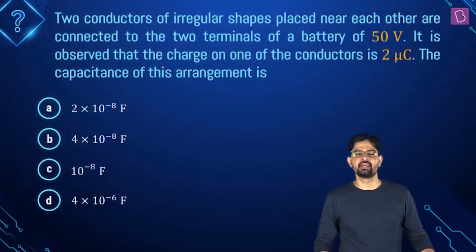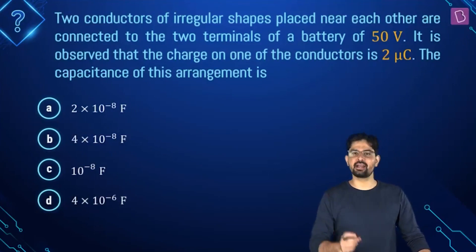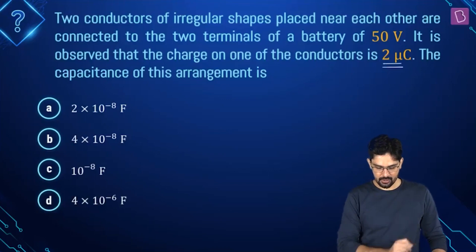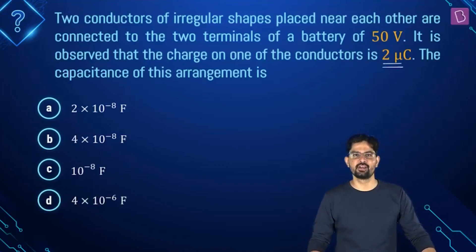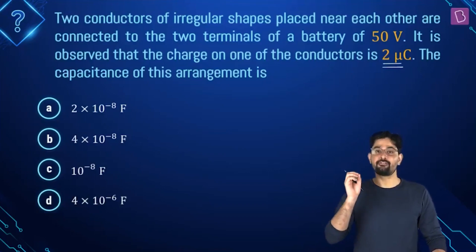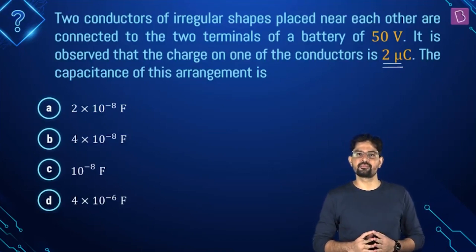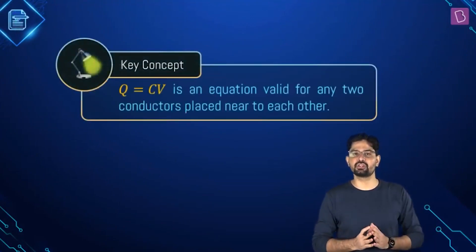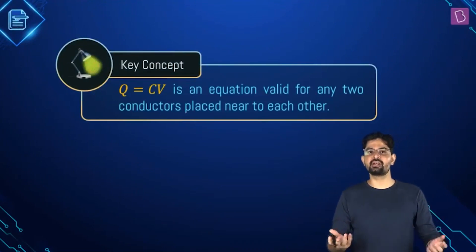Now, according to this problem, there are two conductors of irregular shape which are kept close to each other and connected to a battery of 50 volt. It is observed that the charge on one of these conductors is 2 microcoulomb. You have to find out the capacitance of this arrangement in Farad. The key concept here is that any two conductors placed near each other have the capacity to store charge, so this arrangement is a capacitor.